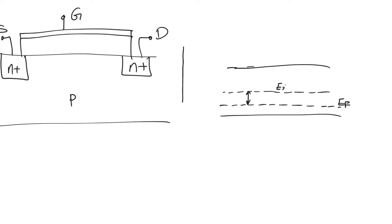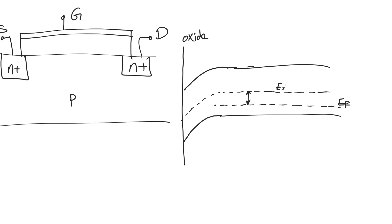Let's assume that this is the surface of the oxide. We defined the threshold voltage as the voltage at which bending in the bands of the substrate is so much that the surface of the substrate is as n-type as the body is p-type. When you apply positive potential to the gate, some of this potential falls upon the oxide and some of it falls upon the surface of the body, causing bending in the valence band, the conduction band, and the intrinsic Fermi level — but not in the Fermi level itself.